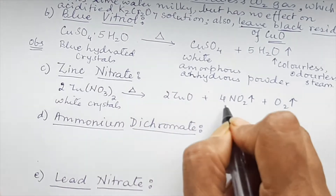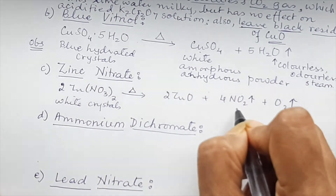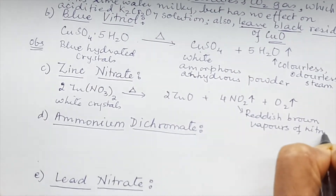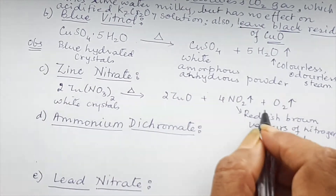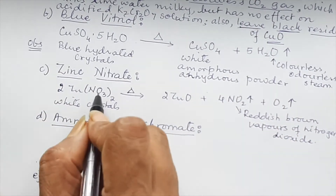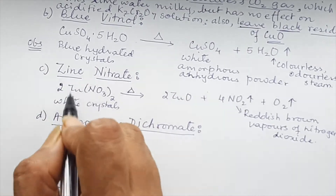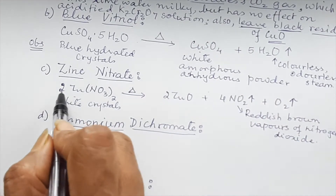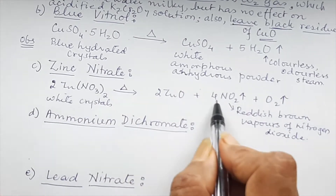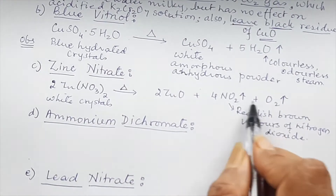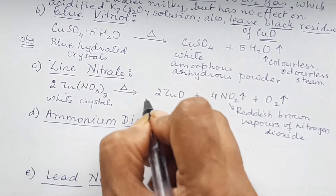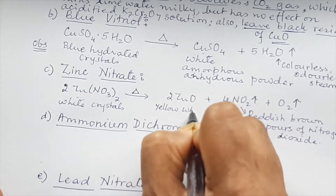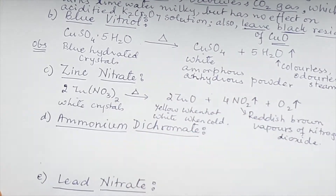Next is zinc nitrate — remember these are white crystals. When a nitrate radical is heated, we get NO₂ gas (nitrogen dioxide), so we write: reddish brown vapors of nitrogen dioxide. The balanced reaction — any nitrate in the middle range (not KNO₃ or NaNO₃) gives an oxide, nitrogen dioxide, and oxygen: 2Zn(NO₃)₂ → 2ZnO + 4NO₂↑ + O₂↑. The residue ZnO is yellow when hot and white when cold.